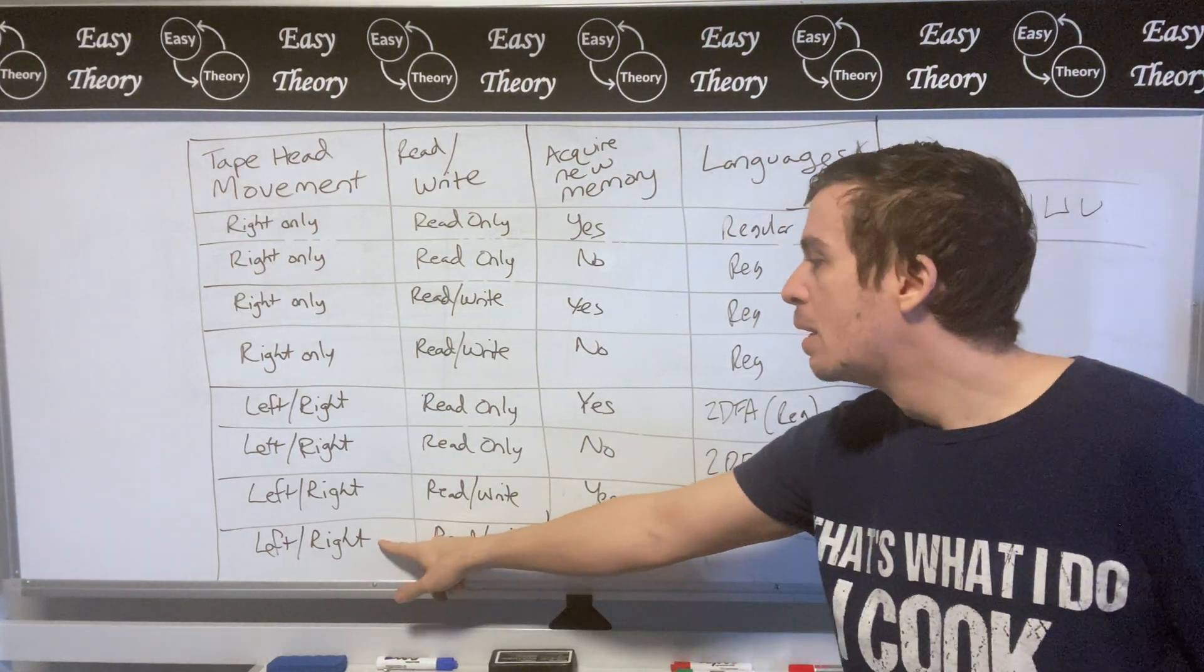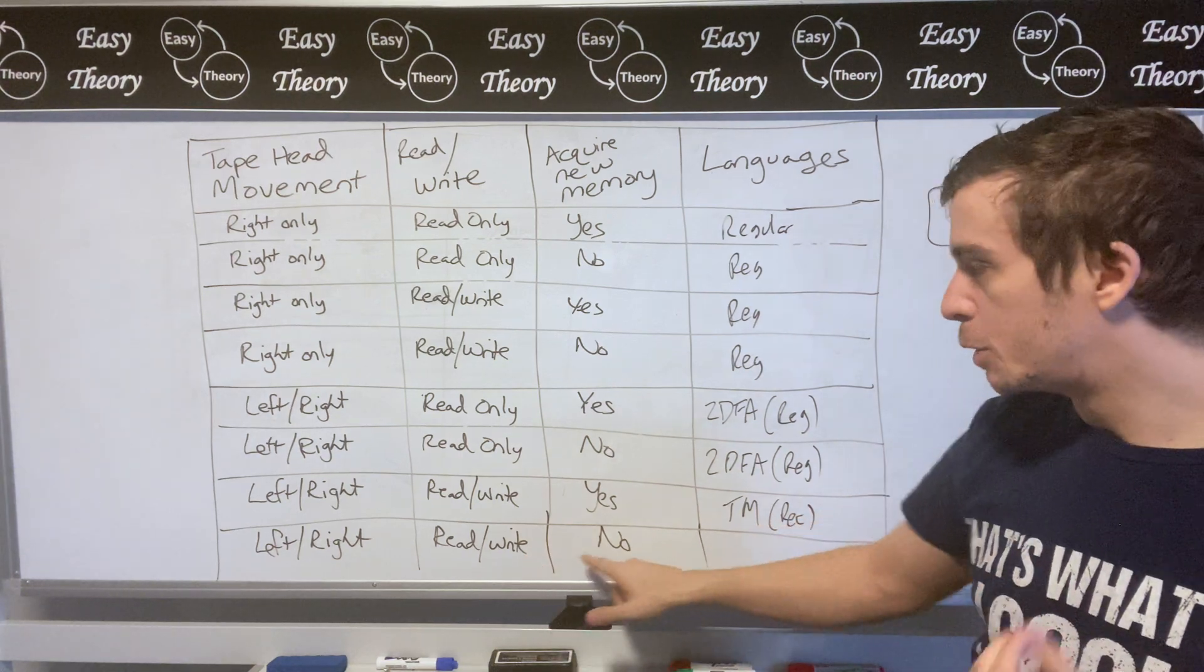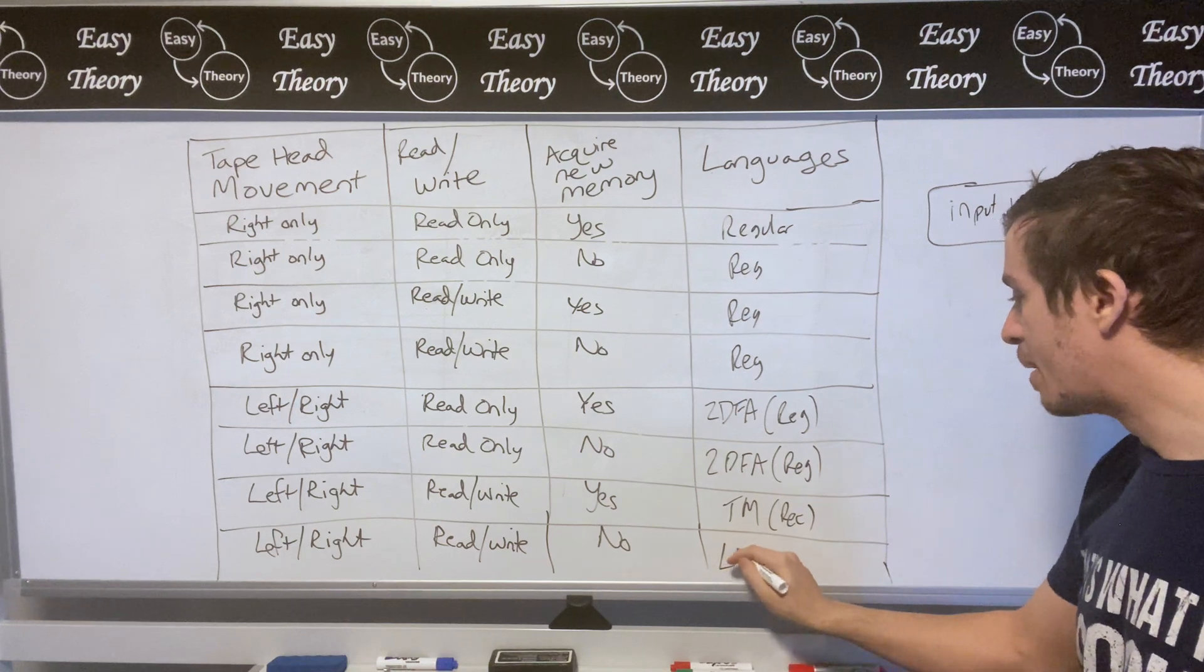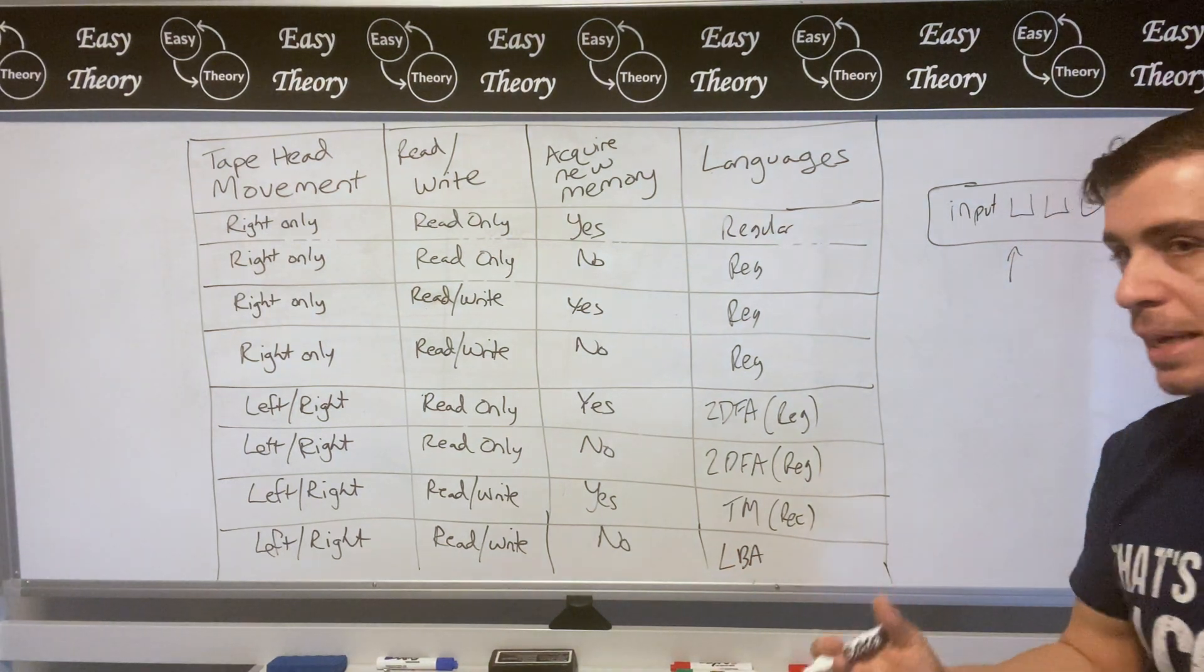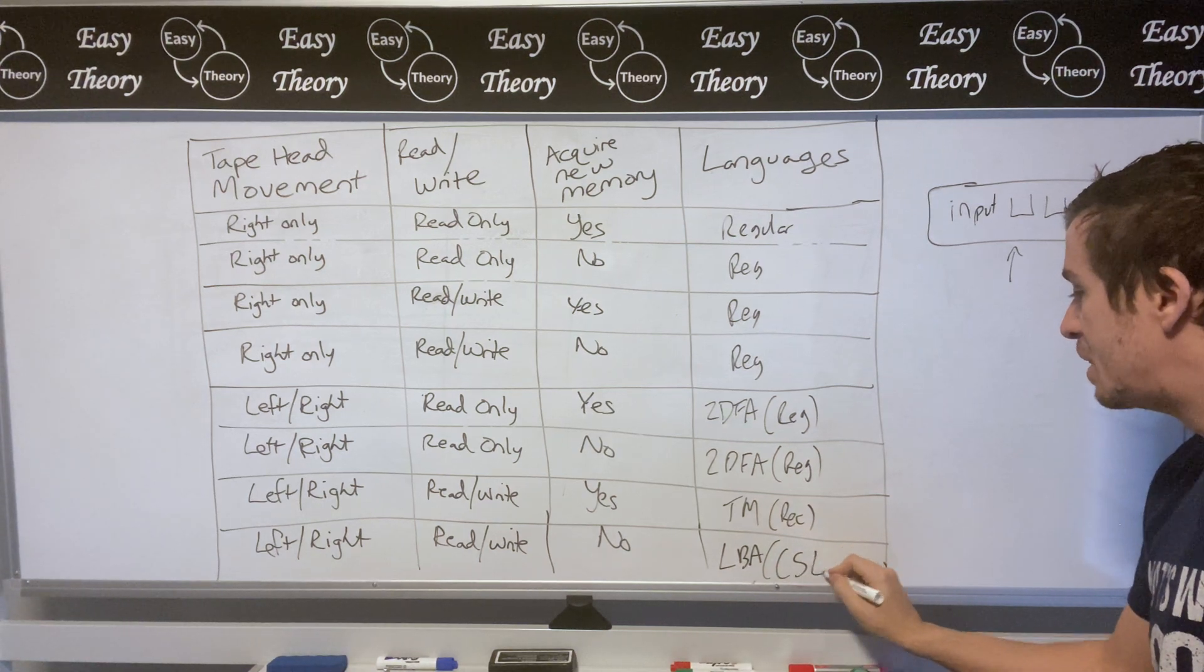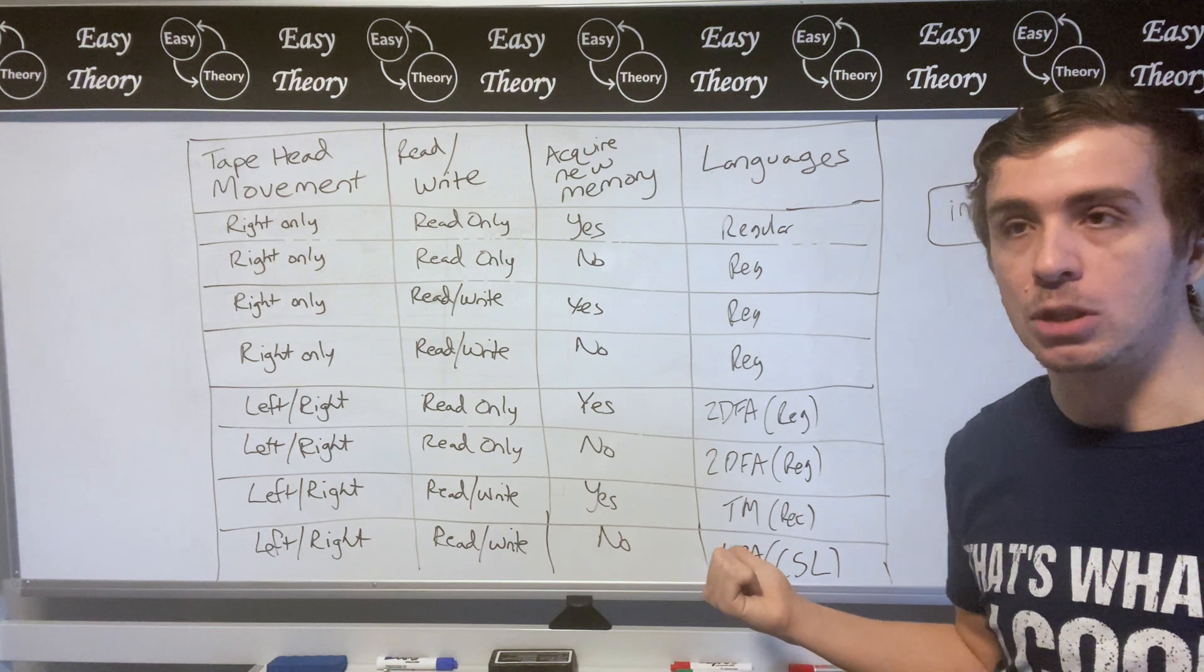And let's think about this one. If we can move left and right and we can read and write cells but we can't acquire new memory, those are recognized by linear bounded automata because you can't acquire new memory. And those are the context sensitive languages which are strictly less powerful than the Turing machines.